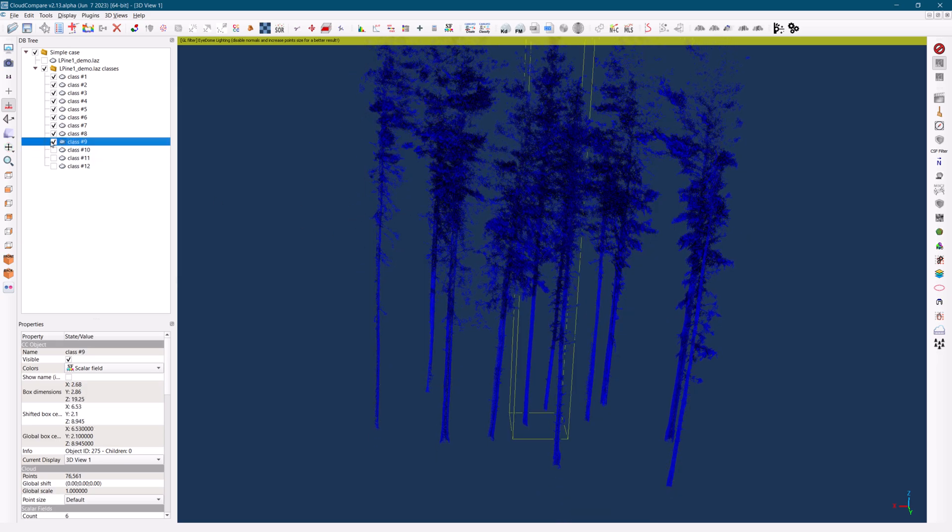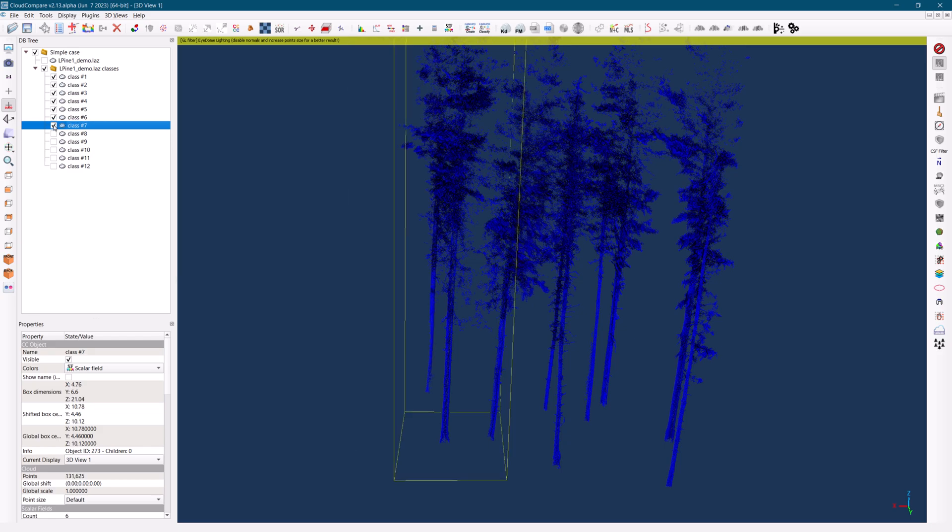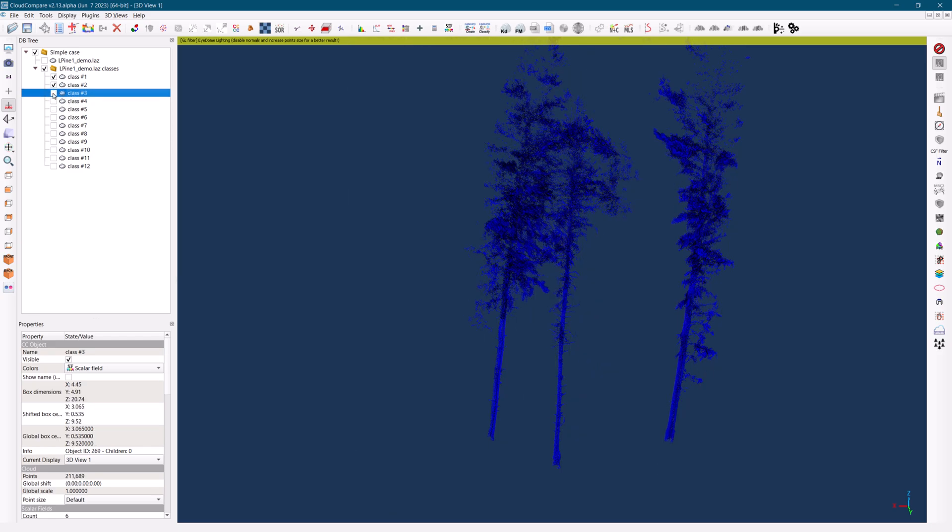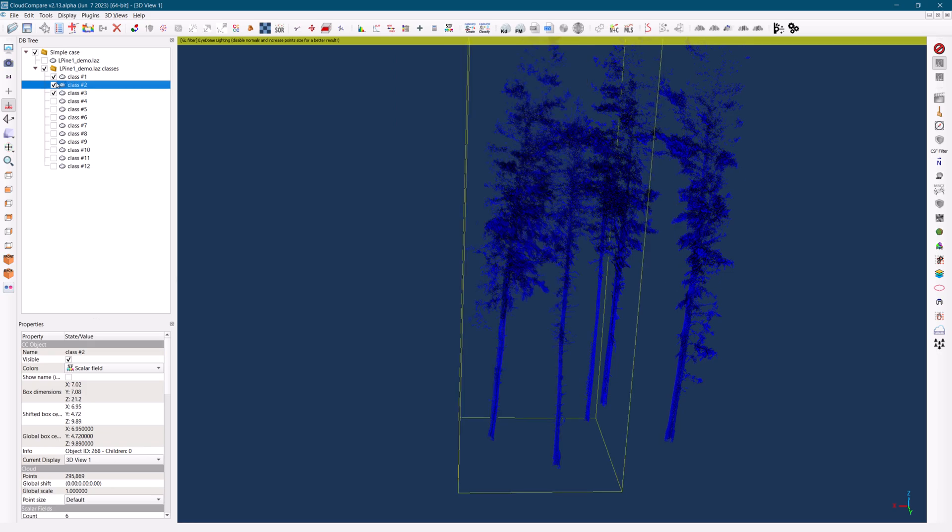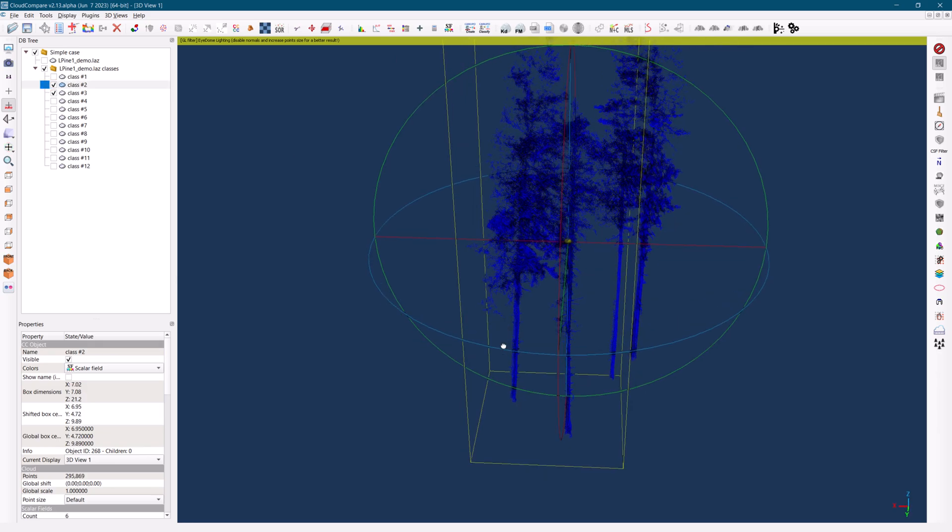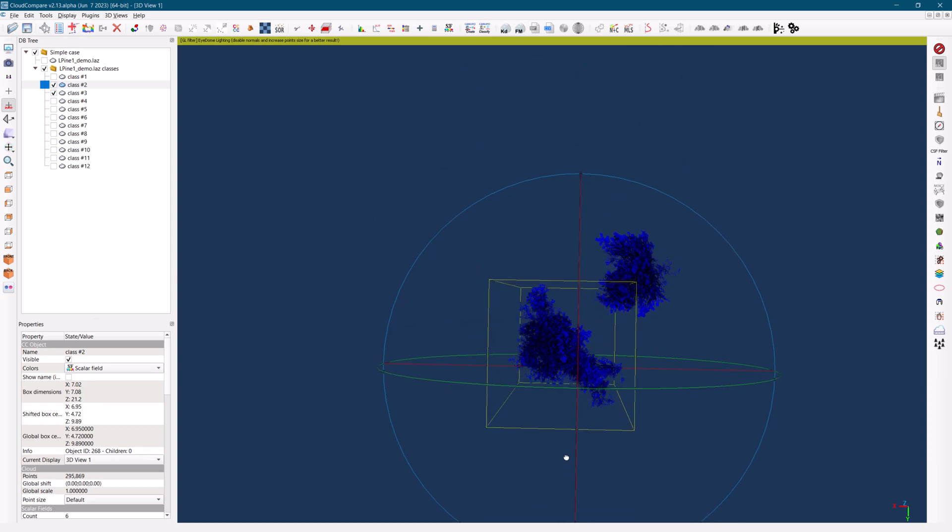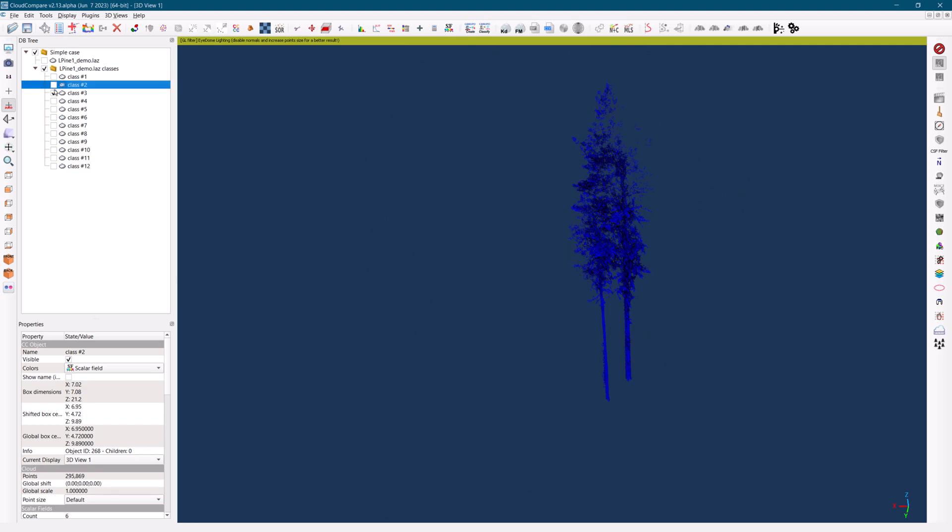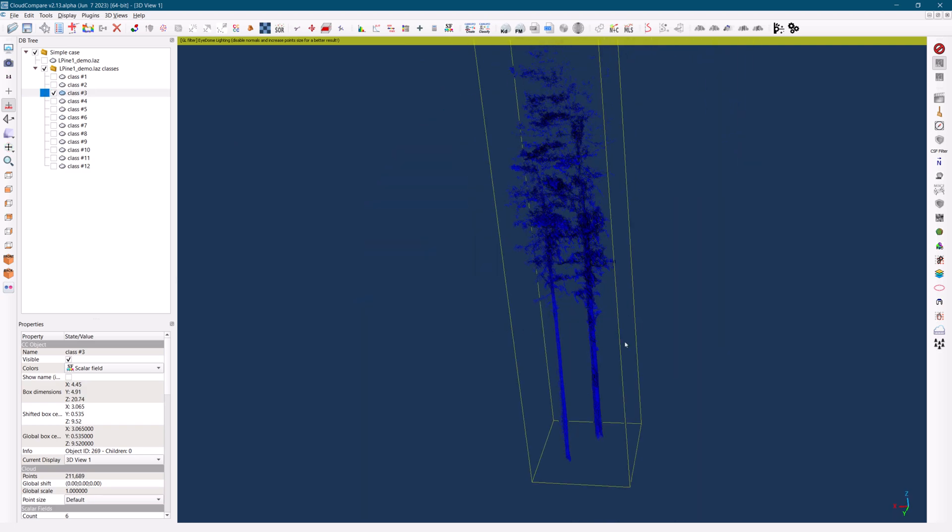Upon performing these steps, we initially obtained 12 trees instead of the expected 14. This discrepancy occurred because four trees were incorrectly merged as two because of their close proximity, making it difficult for the algorithm to differentiate them.